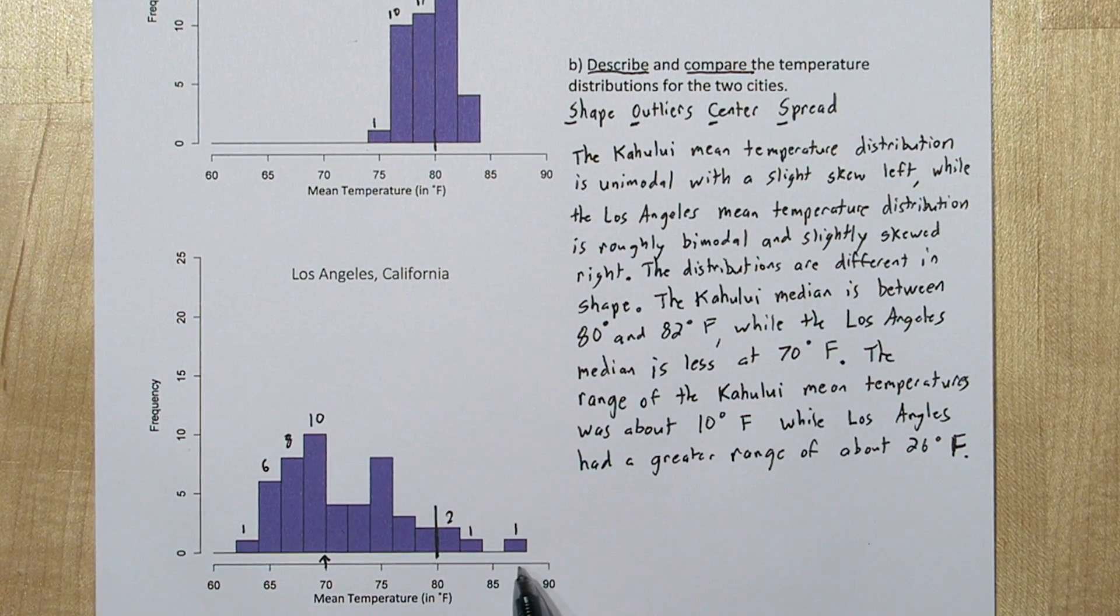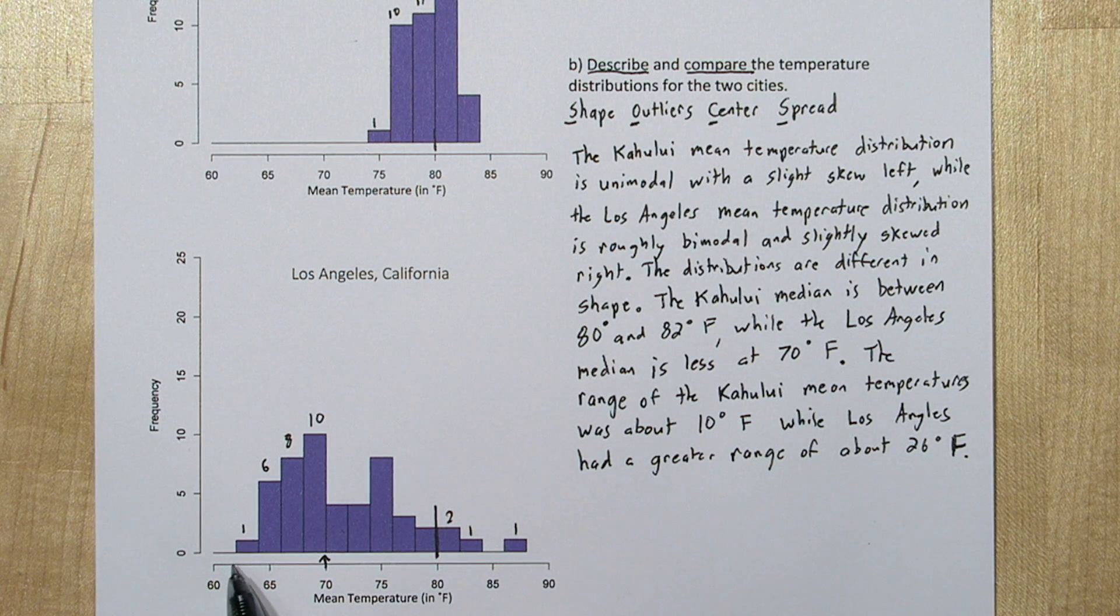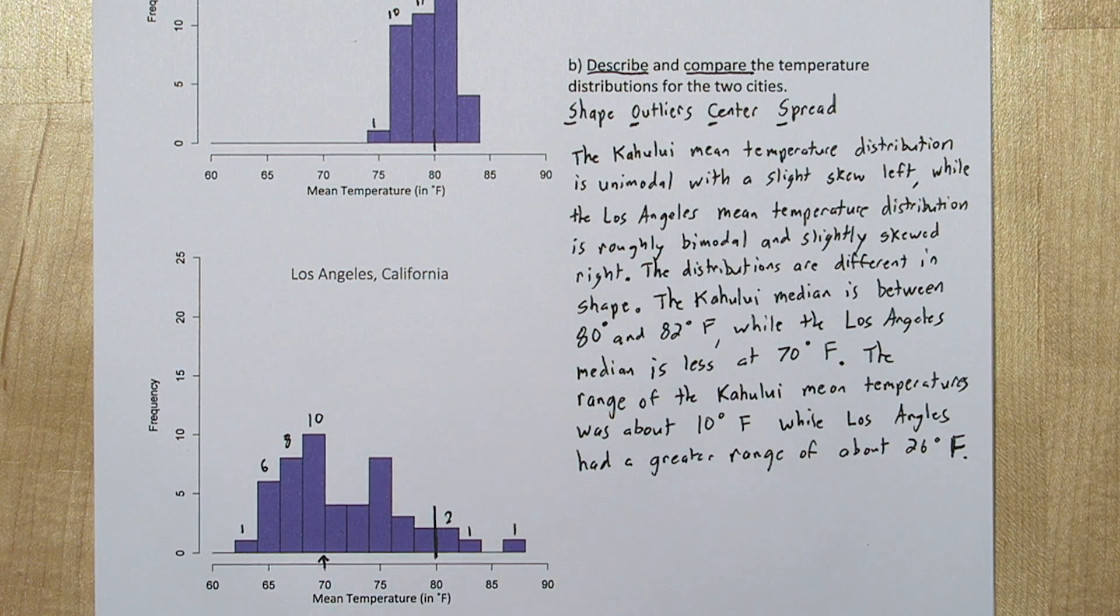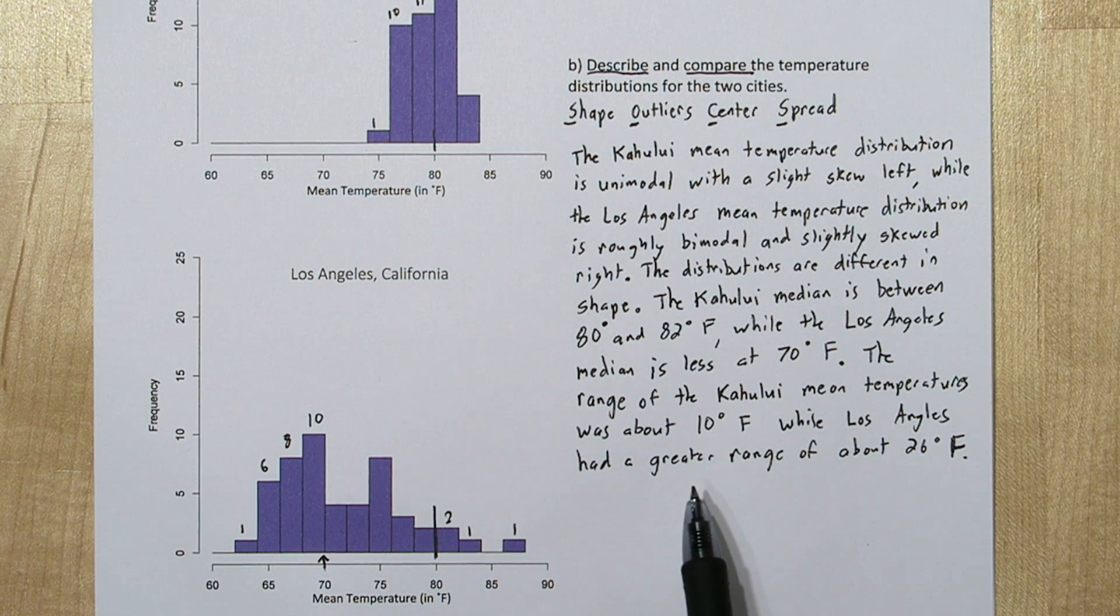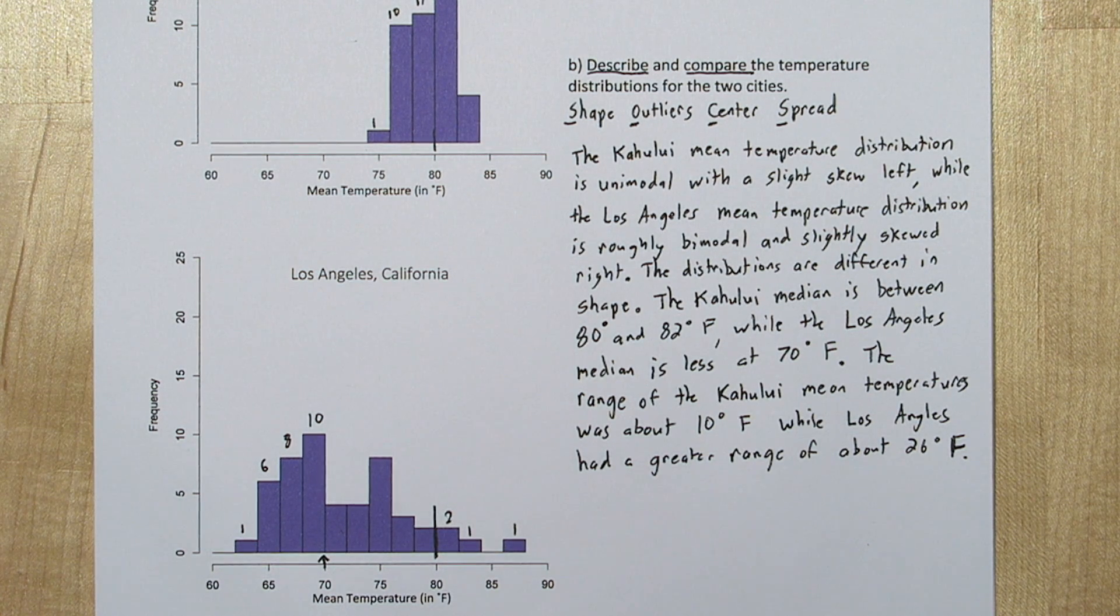For Los Angeles, it looks like it could be as high as 88 degrees and as low as 62 degrees, so perhaps 26 degrees. We also use the word greater, so again we put our comparison into our description.